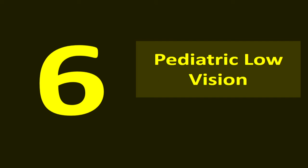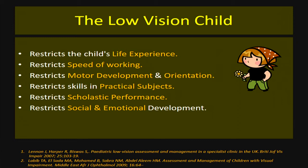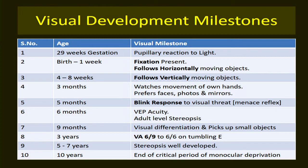Pediatric low vision is very specialized. Low vision has profound implications on a child's motor development and scholastic performance. After the age of three years, children do very well with optical devices. Visual development milestones guide assessment: from birth, a child develops fixation and follows horizontally moving objects; from four to eight weeks, vertically moving objects; at five months, blink response to visual threats. Failure to meet these milestones alerts the clinician to possible profound visual loss.